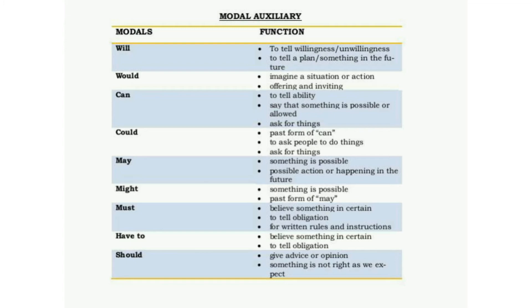Can is used to express ability, to say that something is possible or impossible, and to ask for things. Could is the past form of can, also used to ask for things. May indicates something is possible, a possible action or event happening in the future.